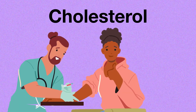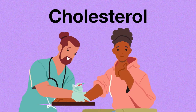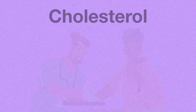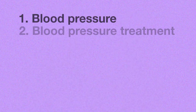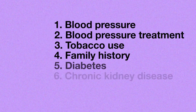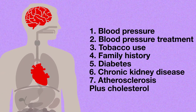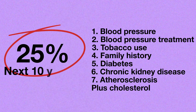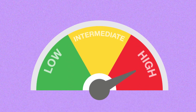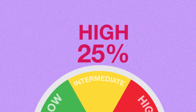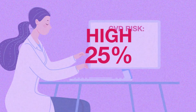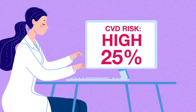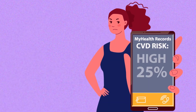Next, you'll go to a lab to have your blood taken so they can measure your cholesterol levels. The lab uses all this information to calculate your risk score — a percent chance you will have a heart attack or stroke in the next 10 years. Your risk will be categorized as high, intermediate, or low. Your CVD risk results will be sent to your doctor and to your My Health Records account.